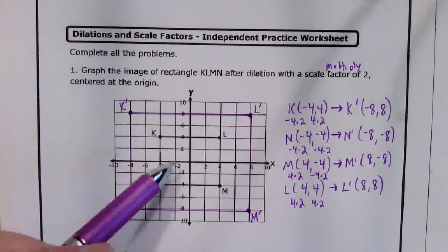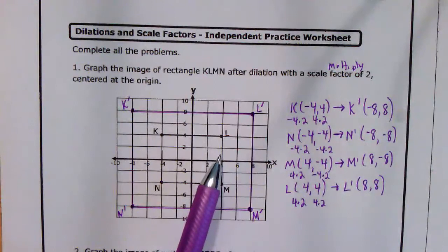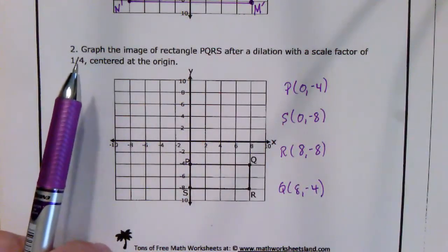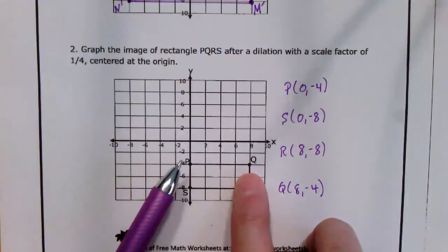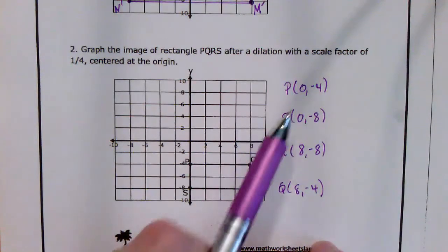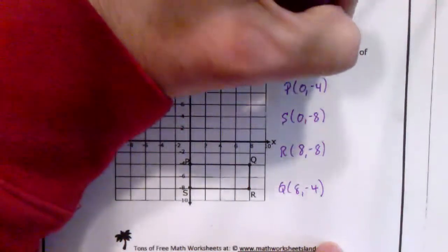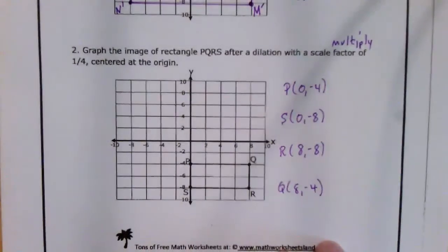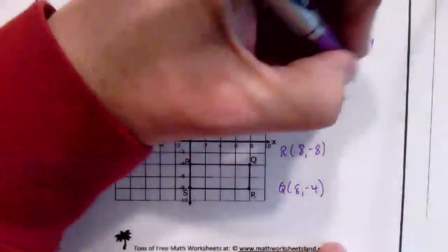Notice that when we multiplied by a scale factor of 2, our shape got larger. Now we're going to multiply this shape by a scale factor of 1 fourth. What do you think that means? That means this new shape is going to be smaller than the original. So let's take a look — we're going to multiply each of those points by 1 fourth. Remember, 'factor' means multiplying.